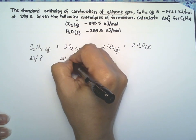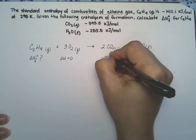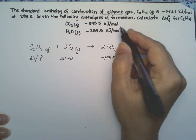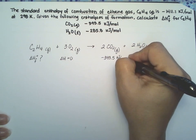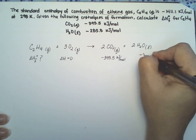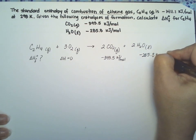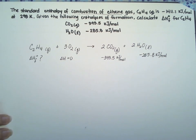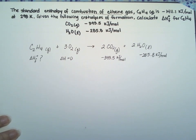This delta H is zero. This one is minus 393.5, you have it right here, kilojoules per mole. Water is minus 285.8 kilojoules per mole, and what we need is this right here. That's perfectly fine.